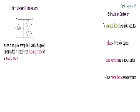यानि कि suppose इस E1 से कोई atom energy लिया — ground energy state से — और excited energy state पे पहुँच गया, तो इसकी energy कितनी होगी जो उपर excited energy state पे पहुँची है: वो E2 minus E1, यानि कि delta E इतनी energy है। अब इतनी ही delta E की energy कहीं बाहर से और impart हो जाए, यानि कि double energy हो गई — same energy, delta E पहले थी और इतनी energy और excited energy state पे impart की जाए, तो now two photon होंगे।